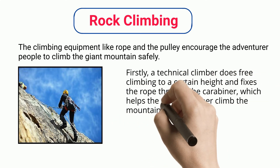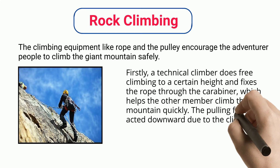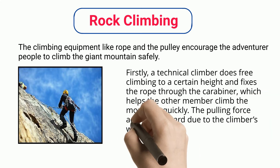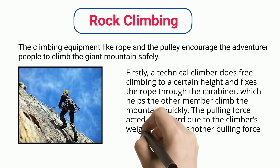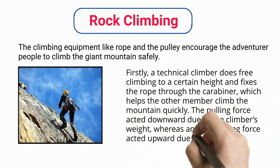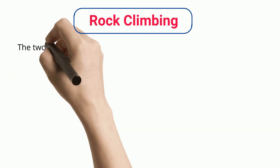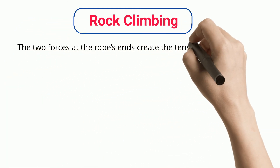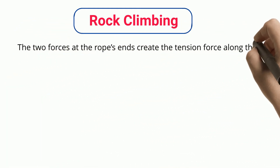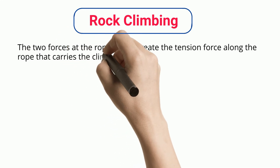The pulling force acts downward due to the climber's weight, whereas another pulling force acts upward due to the carabiner. The two forces at the rope's ends create the tension force along the rope that carries the climber's weight.